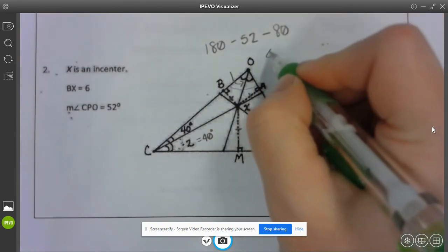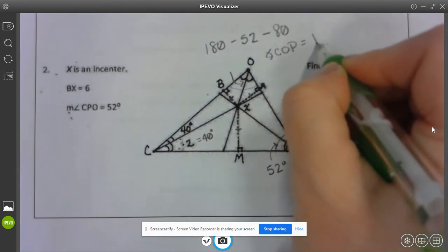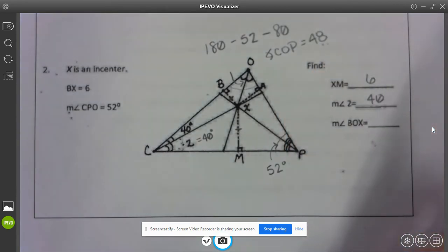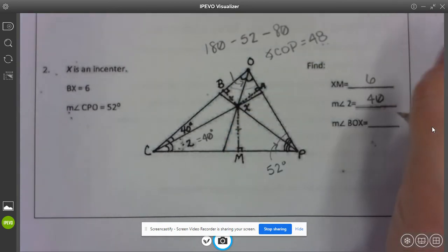So that tells me that angle COP is 48, and then if I cut that in half that will tell me what this angle is here. So angle BOX should be 24 degrees.